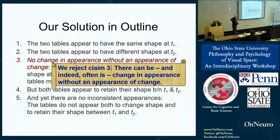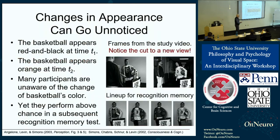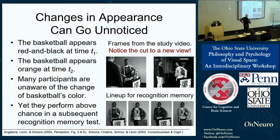Claim three will be the one we propose to reject. We say it is not the case that this principle holds. There can be — and often is — change in appearance without an appearance of change. To motivate this, there is a large literature in psychology on change blindness. For example, in one study a basketball is red and black, then after a cut in the movie it's orange. Many participants are not aware of the change. But very interestingly, in a recognition memory test afterwards, performance was above chance about the color of the basketball — so somewhere inside their system there was knowledge, yet they didn't notice it.